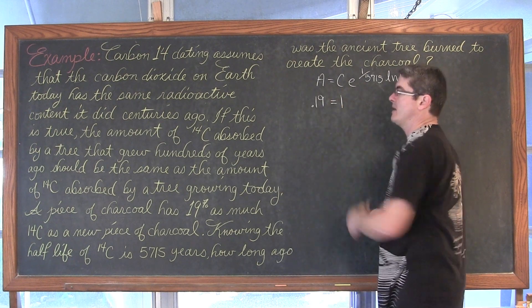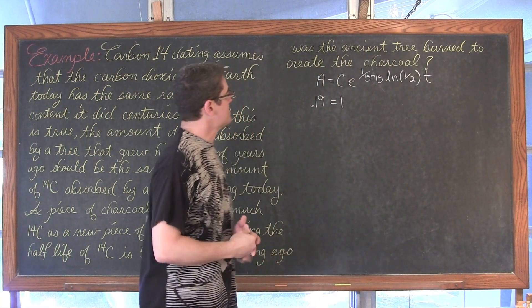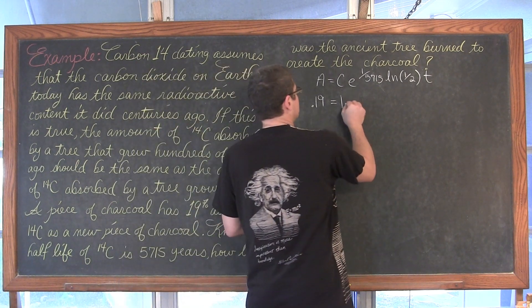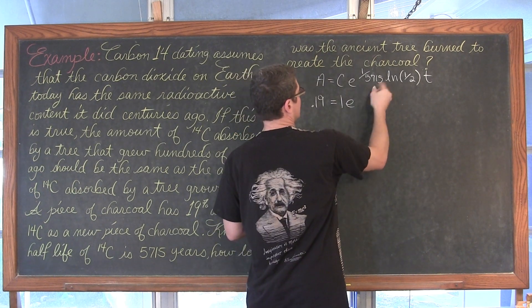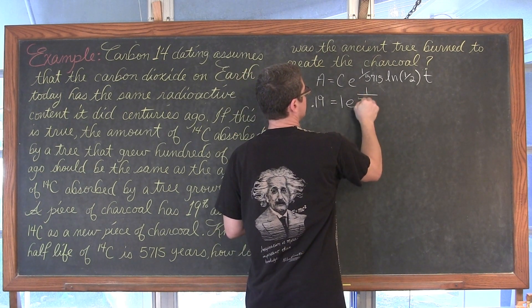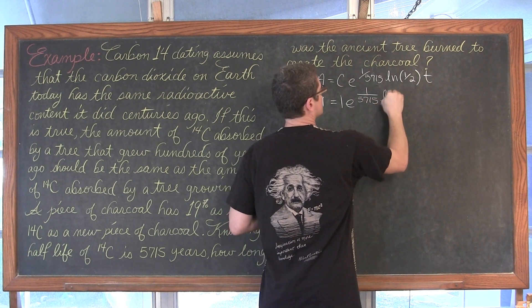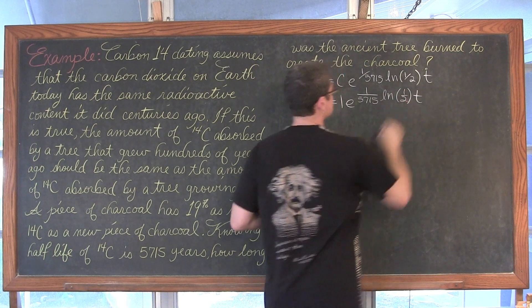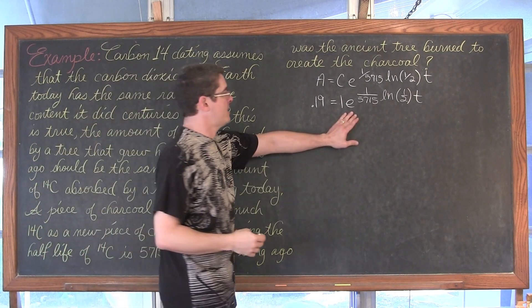If I started with 100, I would have 19. But with the initial amount of 1, I can just write 0.19 equals e raised to the 1 over 5715 times the natural log of one-half times t power. Again, you can't solve for a variable when it's in the exponent. To get rid of that base, I'm going to take the natural log of both sides.